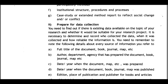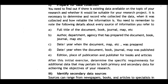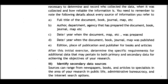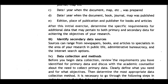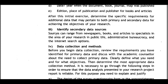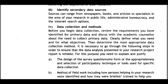Note the following details about every source of information: full title of the document, book, journal, or map; author or department that prepared it; date or year when it was prepared; date or year of publication; edition; place of publication; and publisher for books and articles. After this initial exercise, determine specific requirements for additional primary and secondary data. Secondary data sources can range from newspapers, books, and articles to specialists in the area, public administration, and the internet.